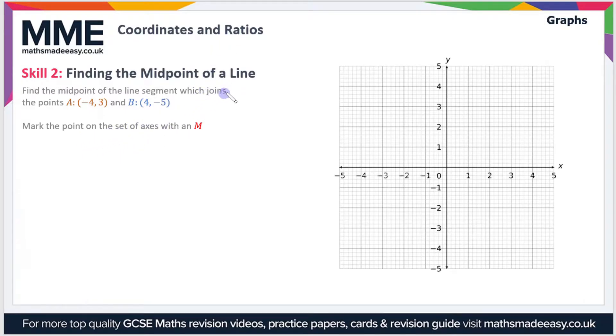Let's first mark these points A and B. A is the point (-4, 3), so that's this point up here, so we'll label that A. And B is the point (4, -5), so we go to 4 then down to -5, so that's this point here.